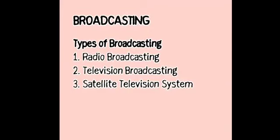The components are: number one, the programming source; number two, the broadcast center; number three, the satellite; number four, the satellite dish; and number five, the receiver.